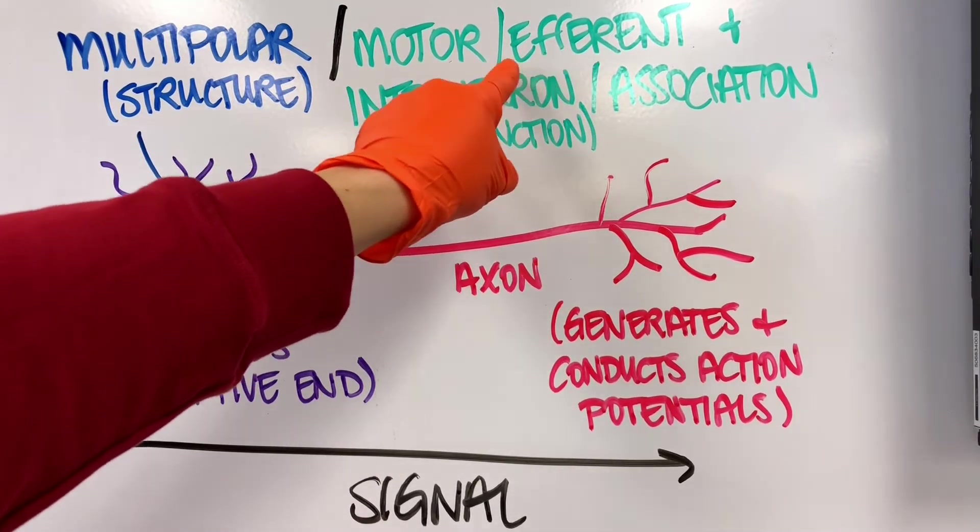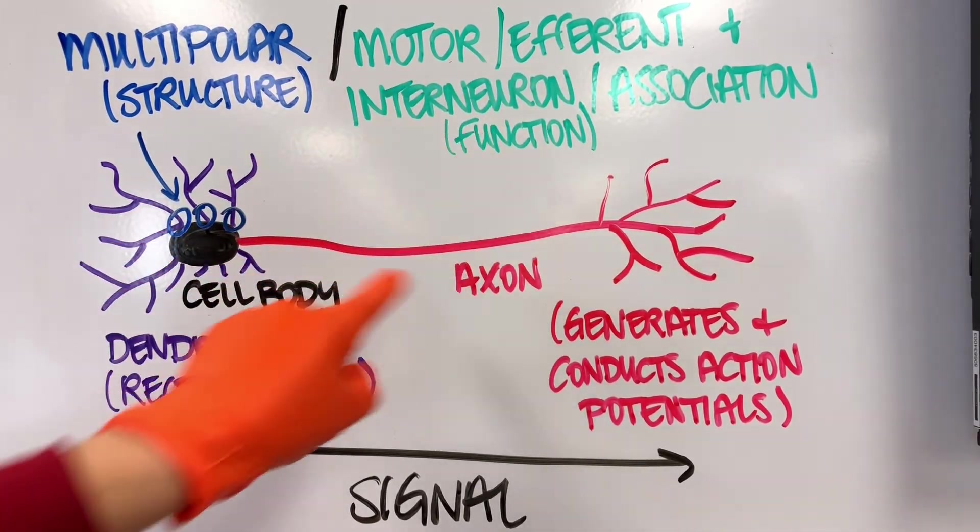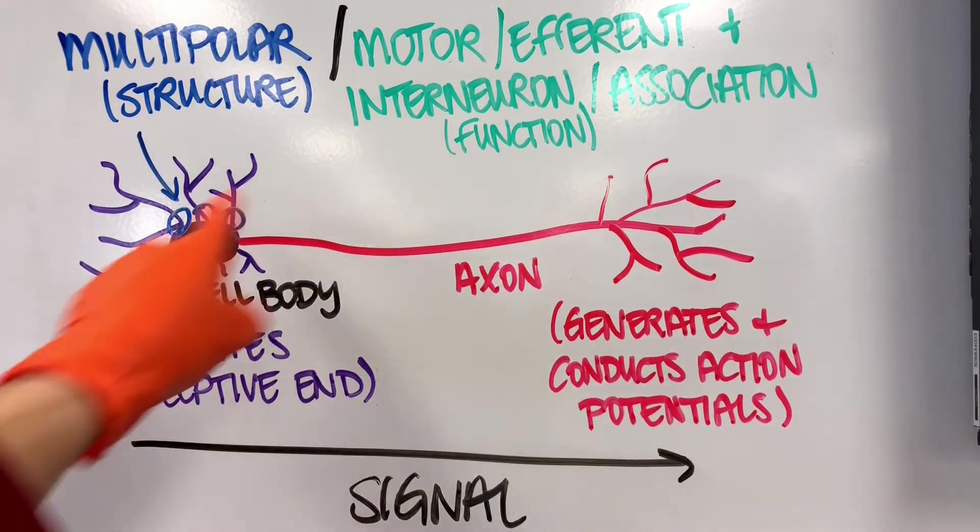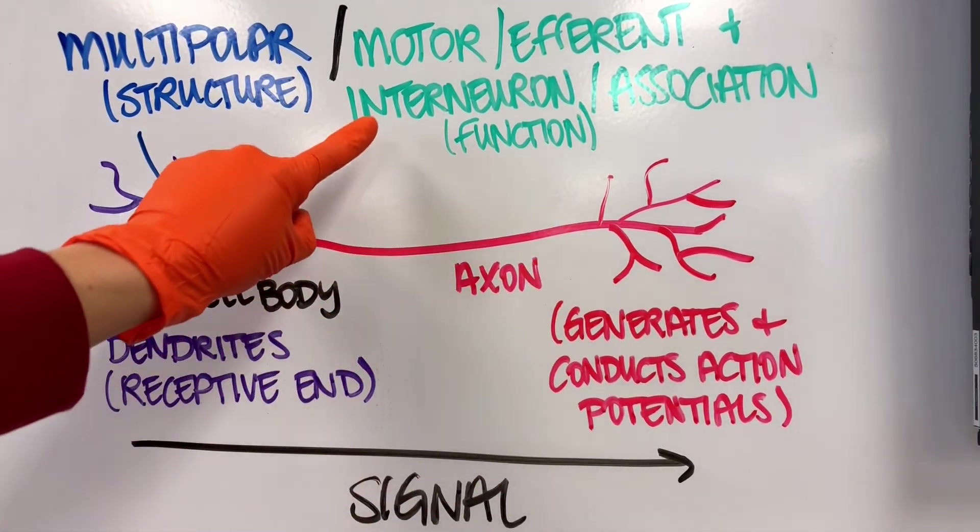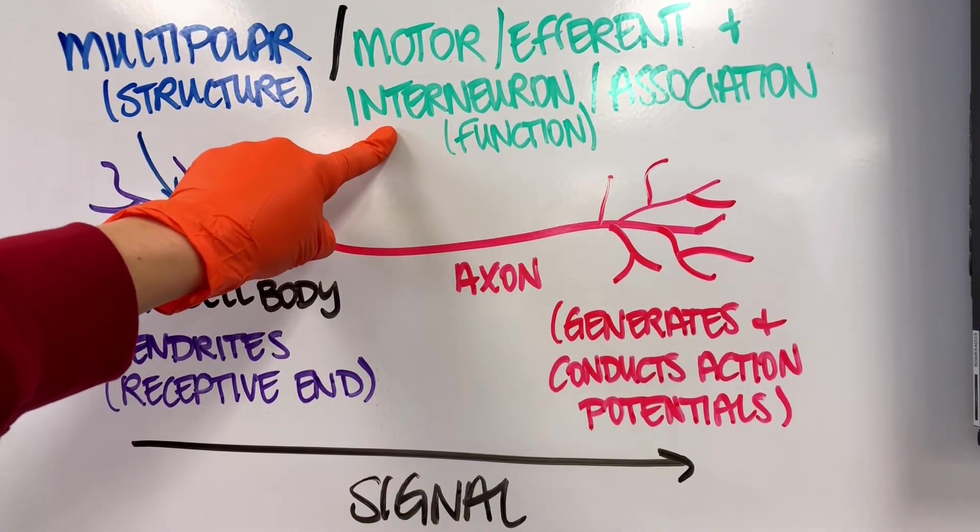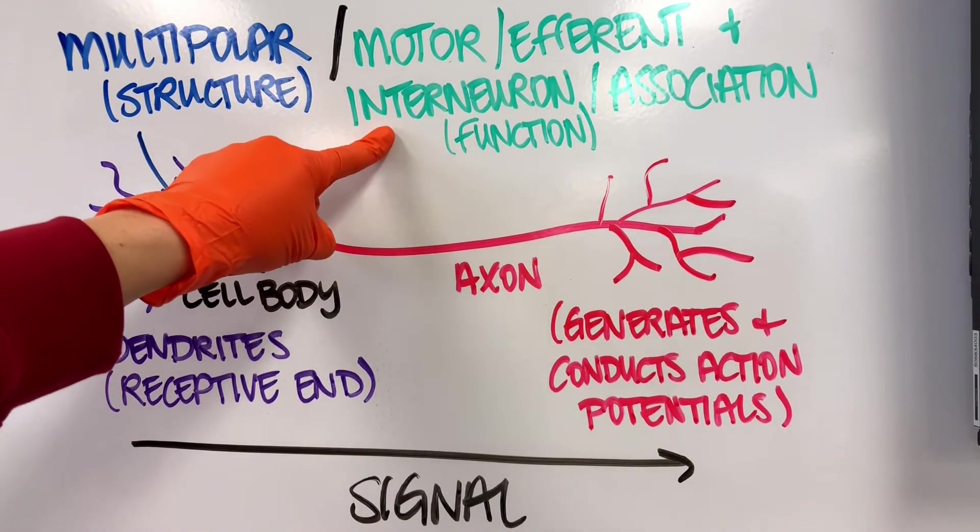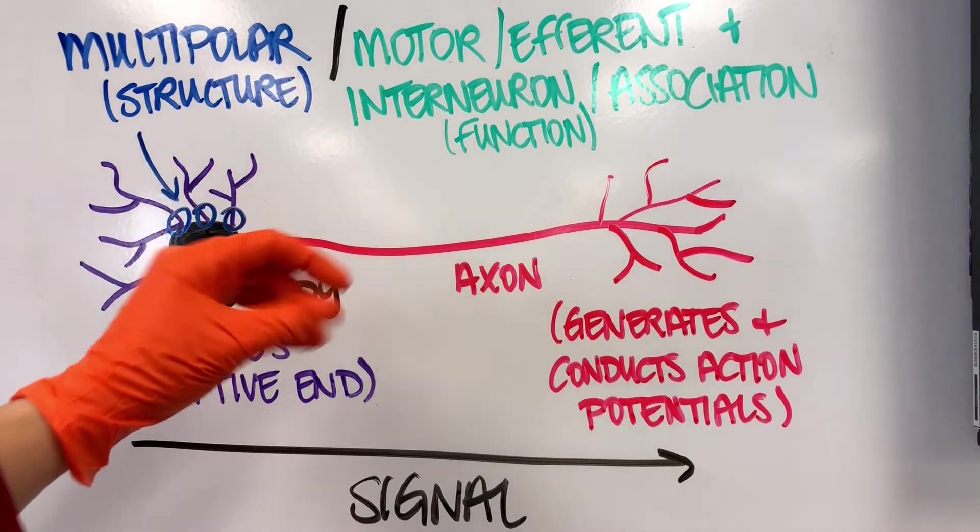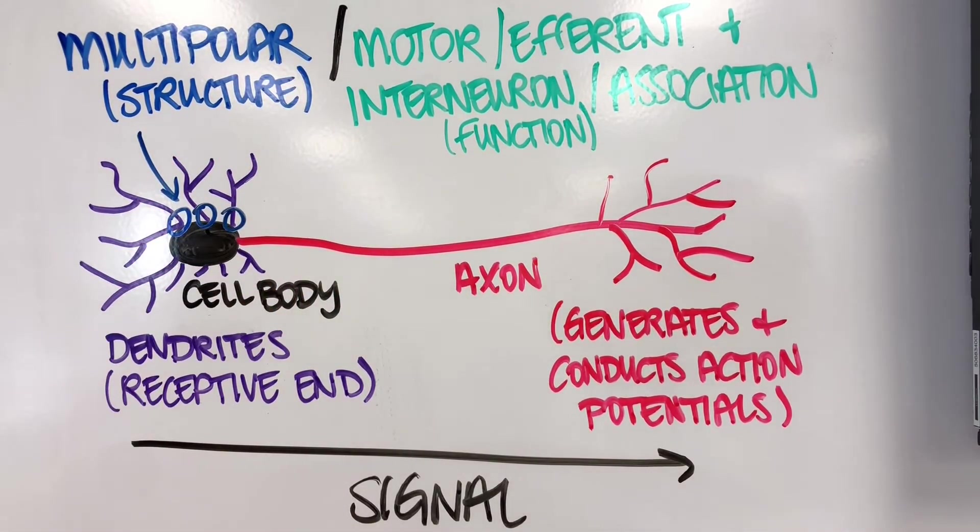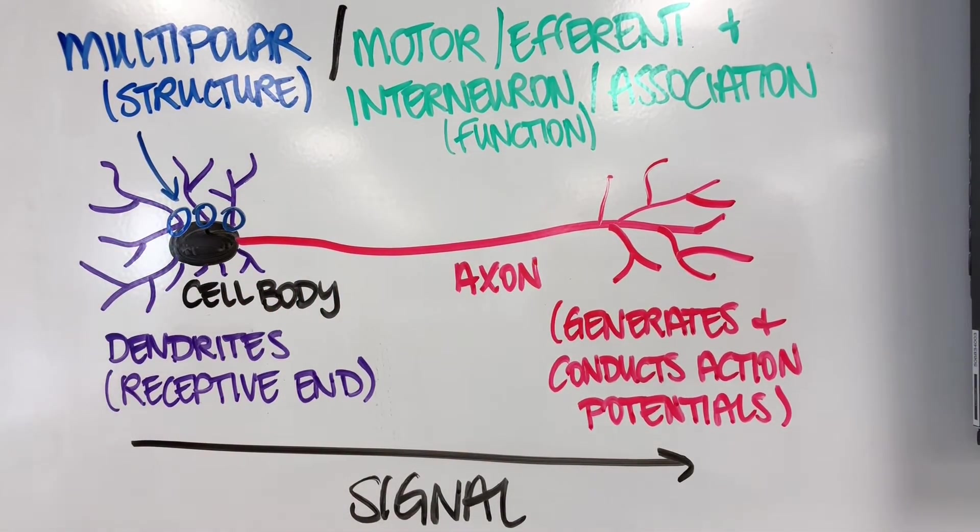Multipolar neurons also make up the shape of most interneurons or association neurons. This is the function. Remember that interneurons lie completely within the central nervous system.